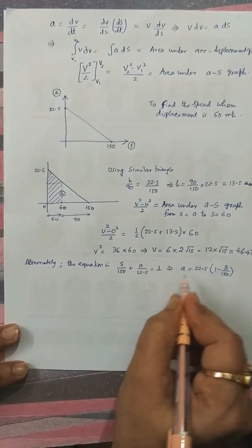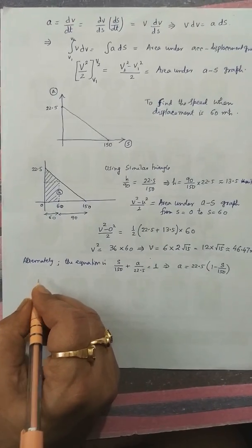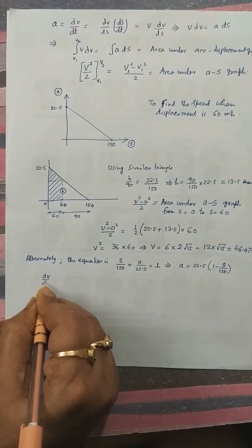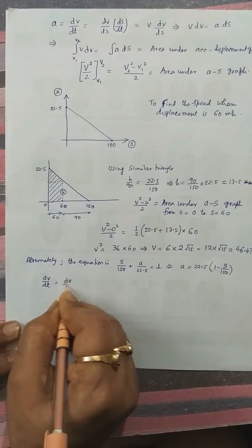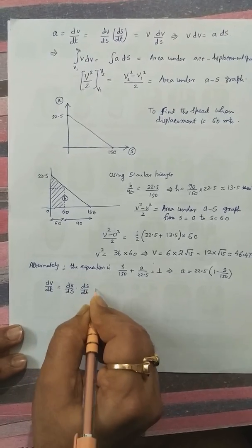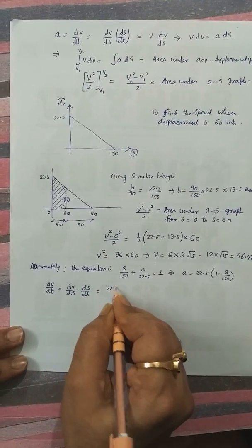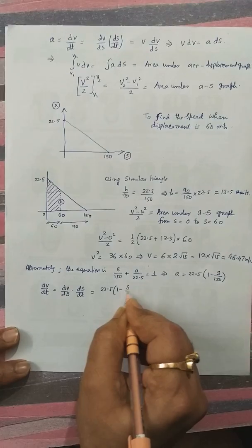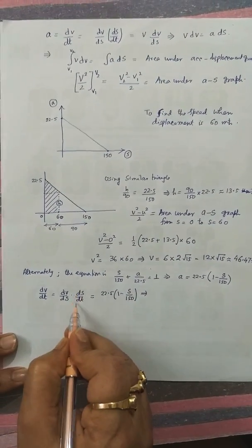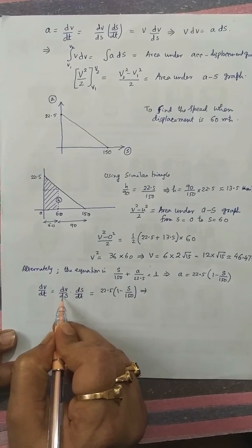This a can be written as dv by dt. Directly we can convert it into dv by ds times ds by dt and this is 22.5 times 1 minus s by 150. This is v dv by ds.